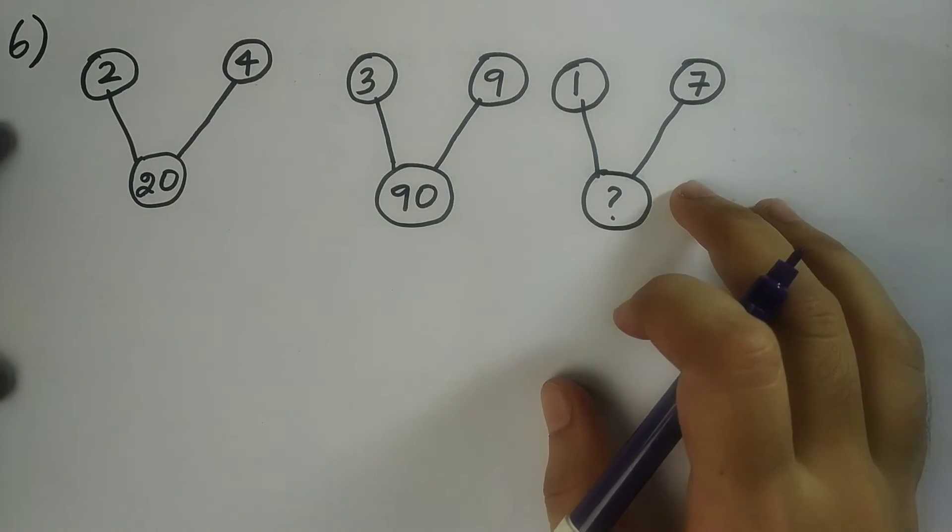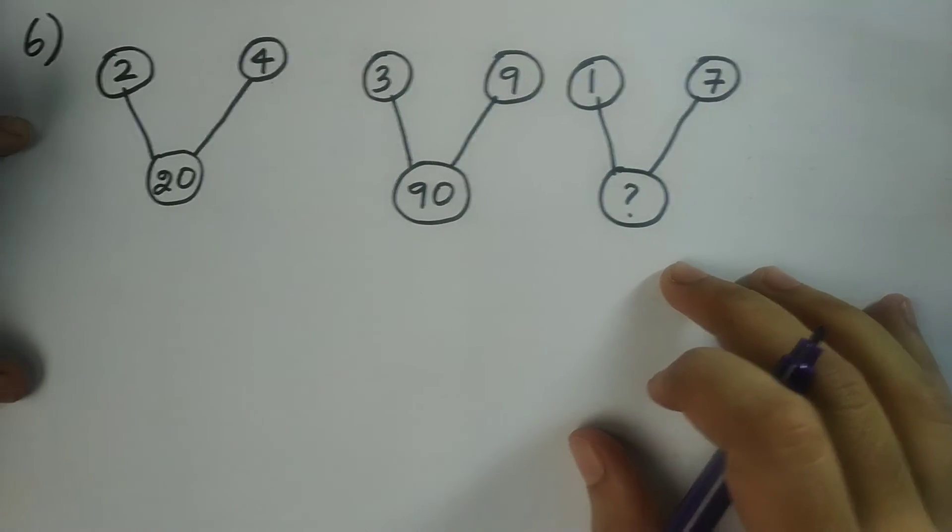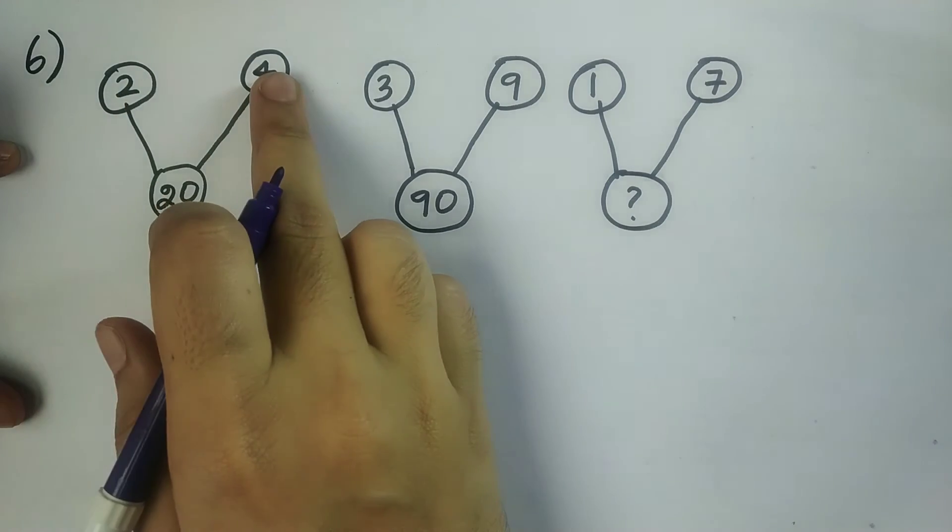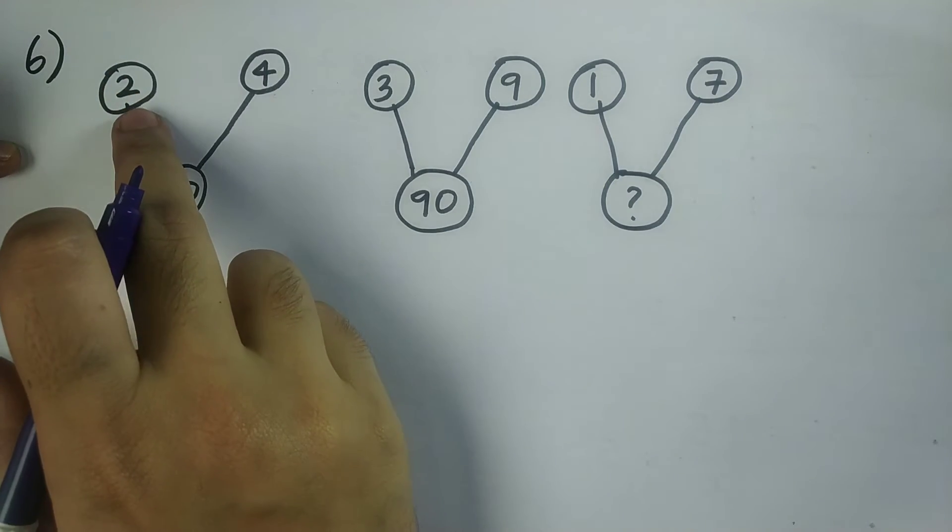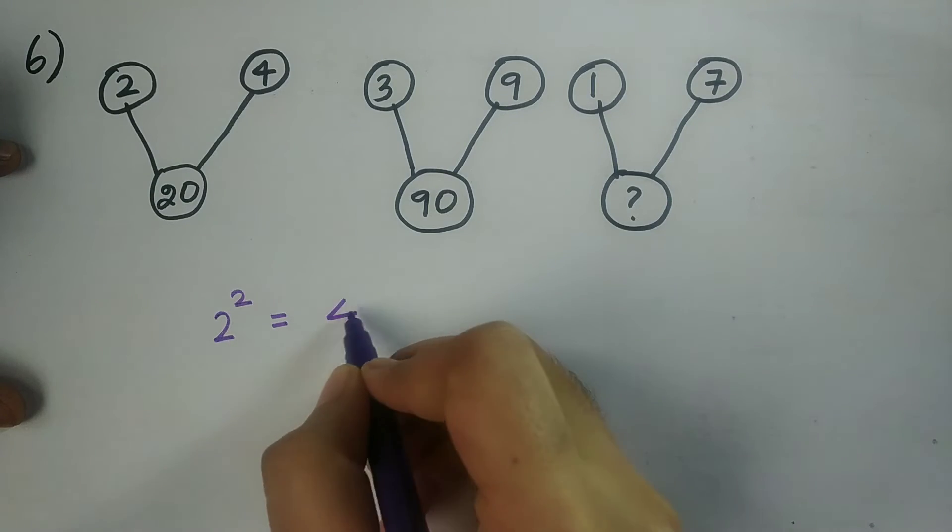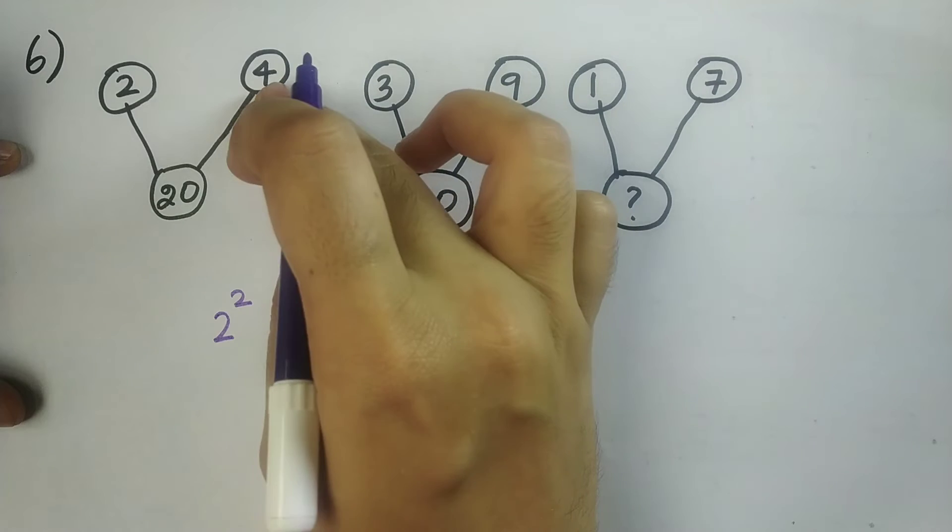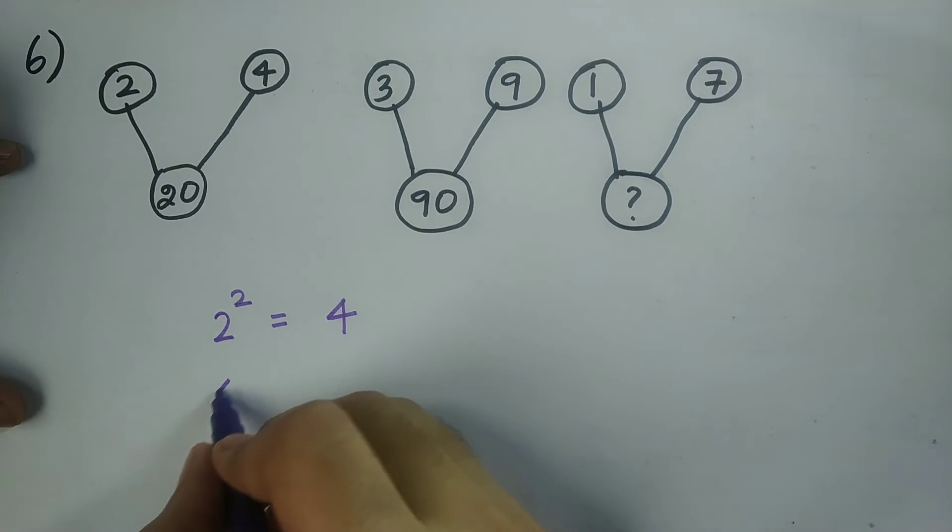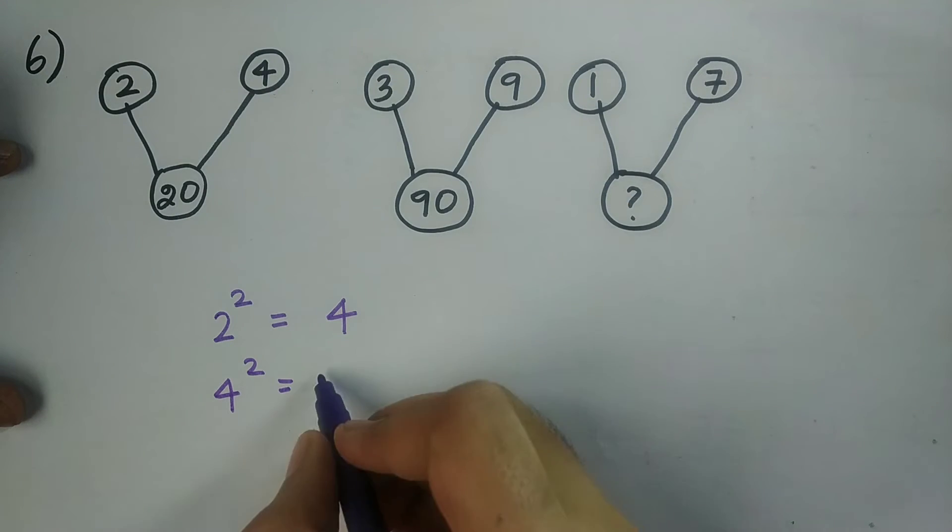The logic for this sum is we need to square the numbers on the top. So first here I am having 2. So I should square that. 2 square is equal to 4. The next number I am having is 4. So 4 square is equal to 16.